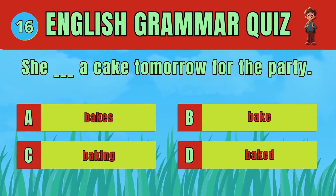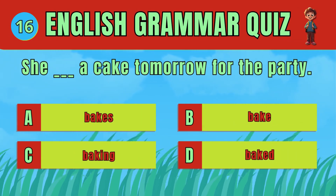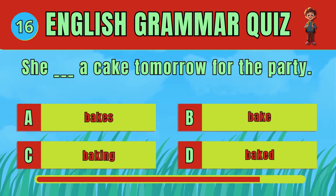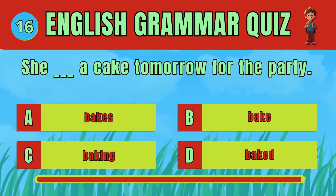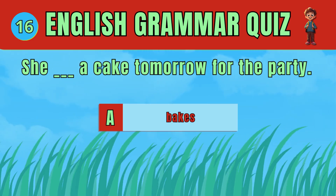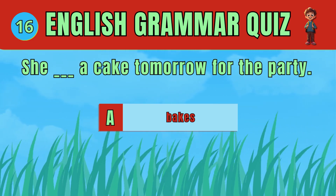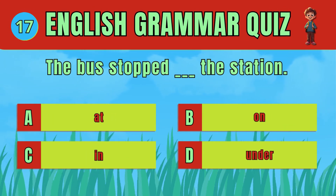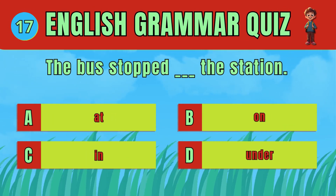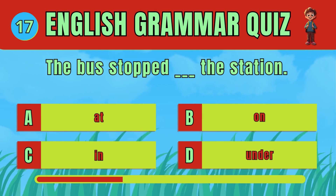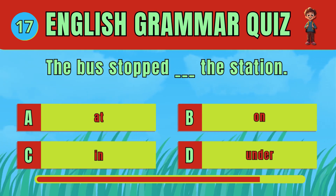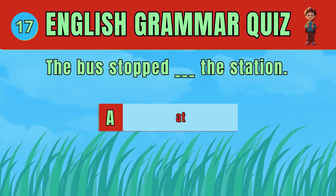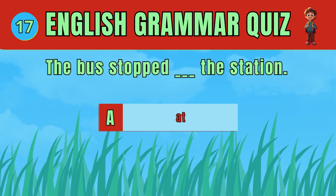Choose the correct verb form to indicate a future action. Choose the correct preposition to describe where the bus stopped. The answer is: at. The bus stopped at the station.